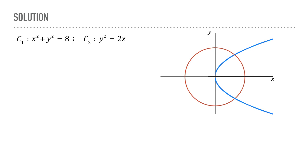These two curves clearly intersect at a point in the first quadrant, and we need to find out the coordinates of that point. Replacing y² with 2x in the first equation, we get x² + 2x = 8. Adding 1 on both sides, we get x² + 2x + 1 = 9, which means (x + 1)² = 3².